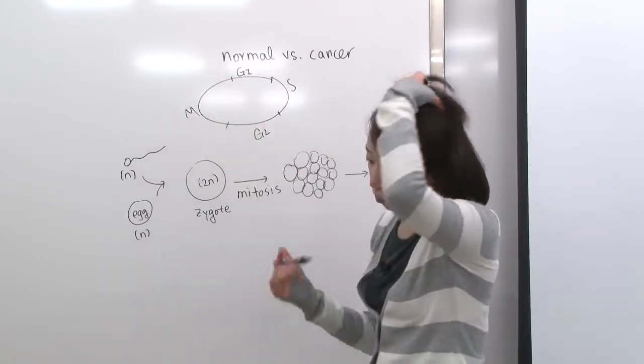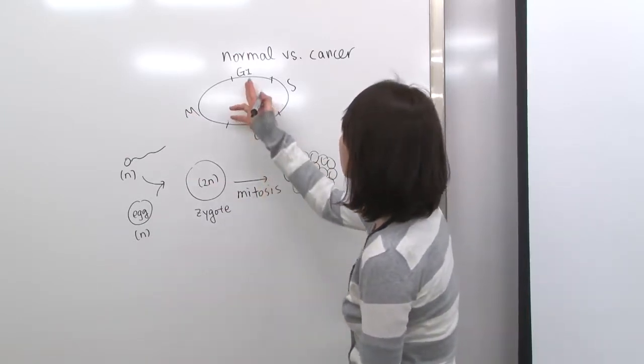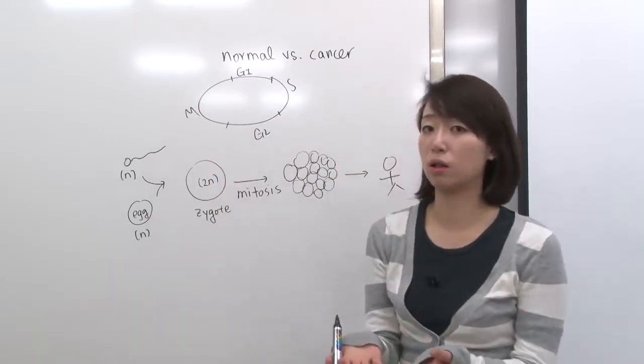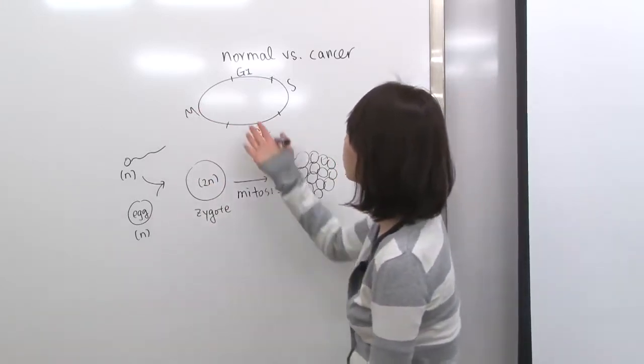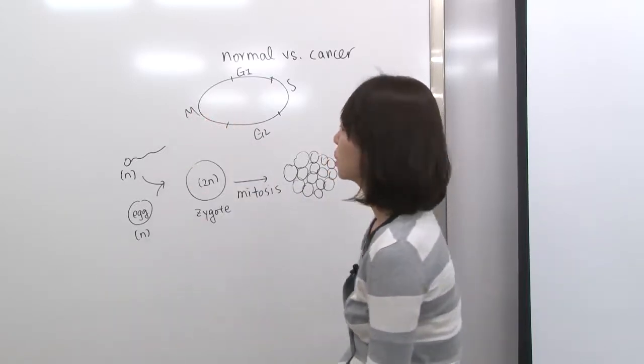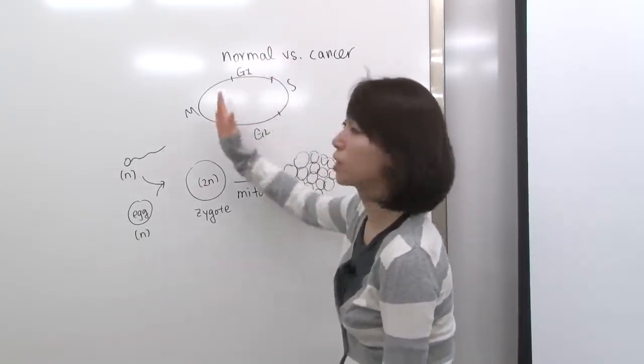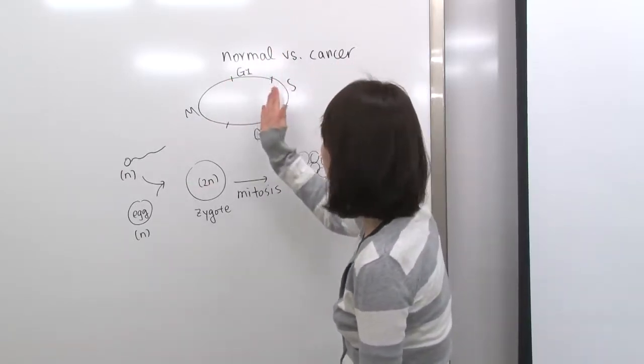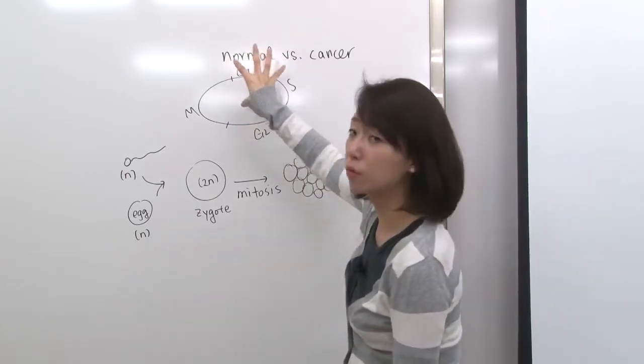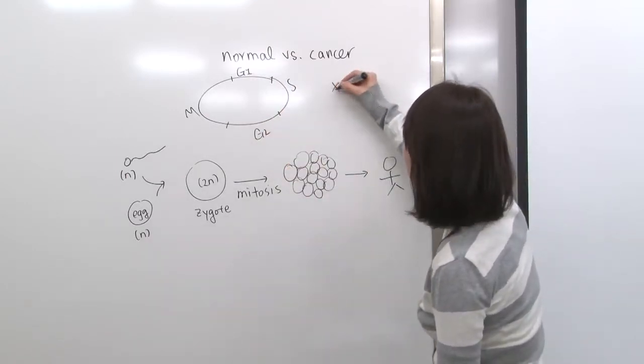For example, if you have wrong DNA information, if your DNA is damaged, then you can't really go through the cell division because it's going to result in the wrong cell. So you can't really go through M phase when you have a problem in your cell. So if that occurs, normal cell actually controls that phase. Normal cell actually stays at G2 phase or at the end of G1 phase if you have some kind of problem. But cancer cell doesn't have that control.